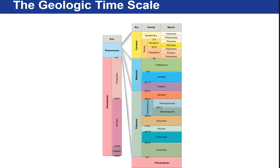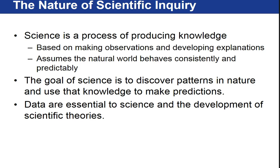Periods can be subdivided into epochs, which are shown here for the Cenozoic era. To summarize: eons represent the greatest amount of time, followed by eras, then periods, and epochs are the smallest. The next section we will discuss is the scientific method, which will be introduced in our next video.